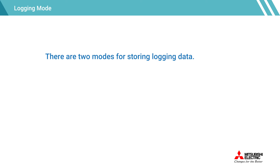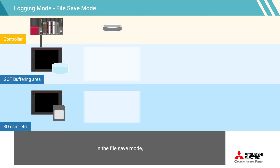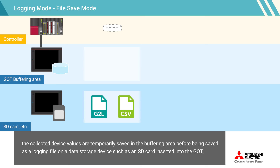There are two modes for storing logging data. One is file save mode, which saves logging data in a file, and the other is buffer historical mode, which saves logging data in the buffering area. In file save mode, the collected device values are temporarily saved in the buffering area before being saved as a logging file on a data storage device such as an SD card inserted into the GOT.